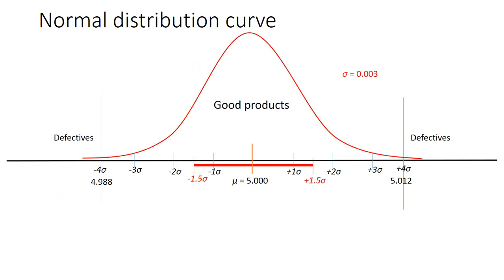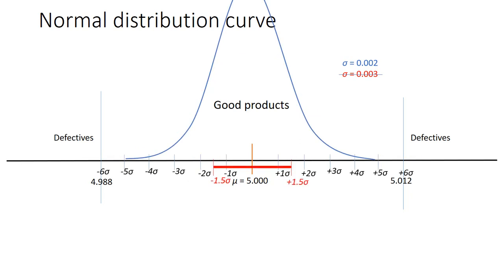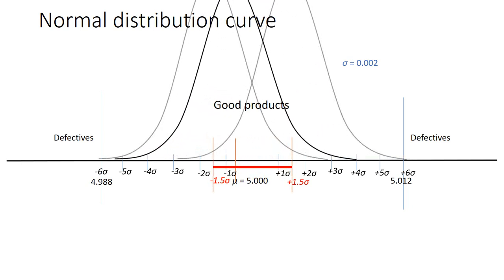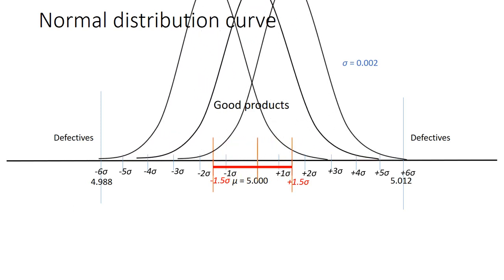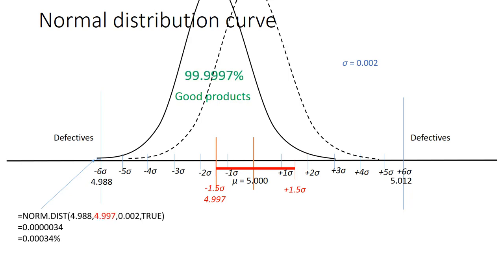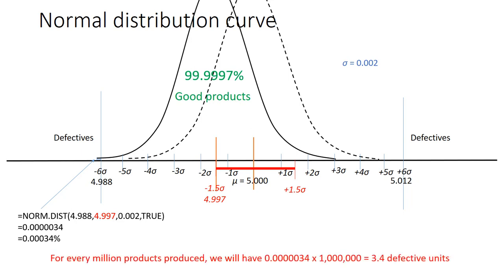Next, let us assume the standard deviation is further reduced to 0.002 inches, so the normal distribution curve becomes steeper. If we still allow the mean to shift between minus 1.5 and plus 1.5 standard deviations, a tiny proportion of the curve will still fall outside the specification limits. For the extreme case where the left-hand tail is outside the lower specification limit, the proportion of defectives is 0.00034% of total products. Therefore, we produce 99.99966% good products.